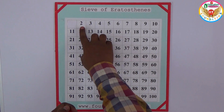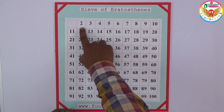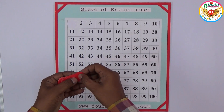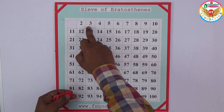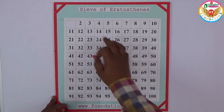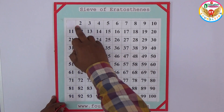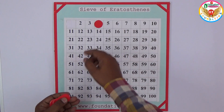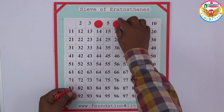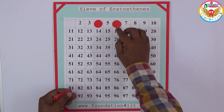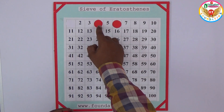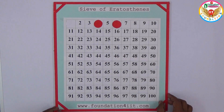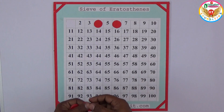2 is a prime number because it has no factor except 1 and 2 itself. Since 2 is prime, all multiples of 2 are not prime because 2 is already a factor. The next multiple of 2 is 4, so we close that. Similarly, 6, 8, and all multiples of 2 we can close with one color — because 2 is a factor of all of them.